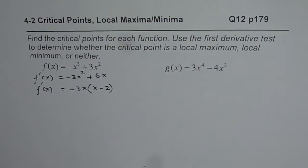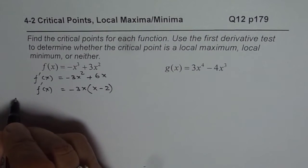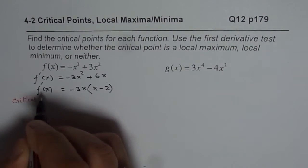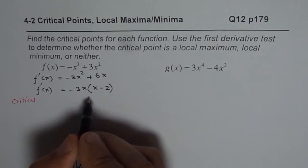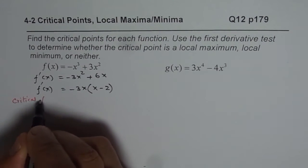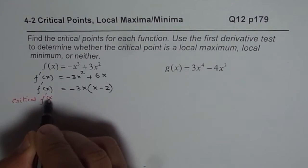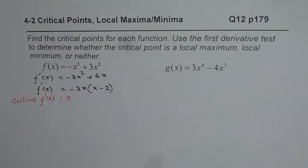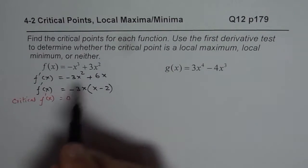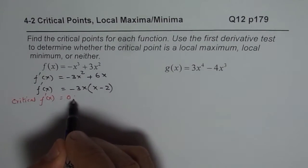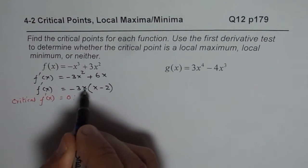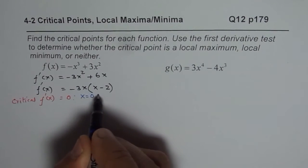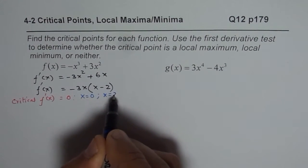To find the critical point, we note that a critical point occurs when the derivative is either 0 or undefined. This derivative cannot be undefined, but it can be 0. Setting it to 0, the critical numbers are x equals 0 or x equals 2.